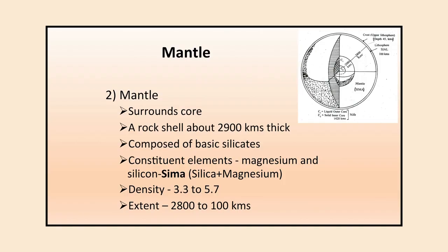The second layer is the mantle, which surrounds the core. It is a rock shell about 2,900 kilometers thick, composed of basic silicates. Its constituent elements are magnesium and silicon, making it SIMA. Its density varies between 3.3 to 5.7, and it extends from 2,800 kilometers to 100 kilometers from the inner side to the outer side.